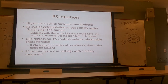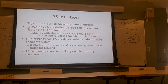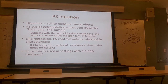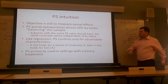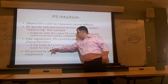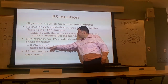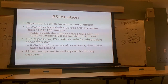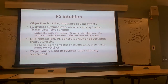The basic intuition of propensity scores: we're going to take all the potential X's that we can find and summarize them in a single measure, which is the probability of receiving the treatment. Like regression analysis, propensity scores only control for observable characteristics, and our conditional independence assumption will hold — because if it holds for a vector of X covariates, it also will hold for E[D|X], the probability of getting the treatment.